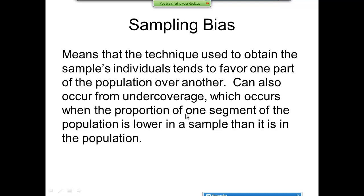Sampling bias means a technique used to obtain a sample tends to favor one part of the population over another. It can also occur from under-coverage, which occurs when the proportion of one segment of the population is lower in a sample than it is in the population.